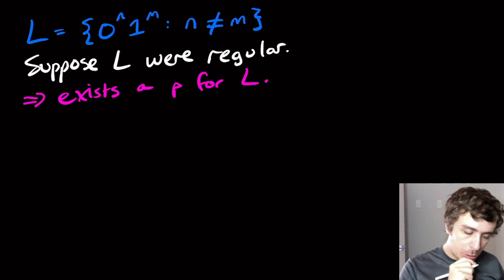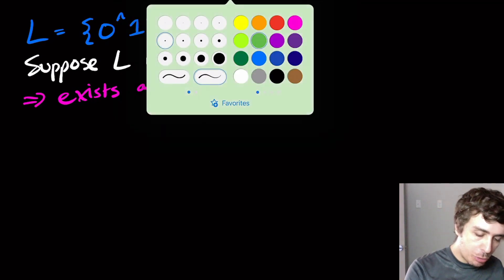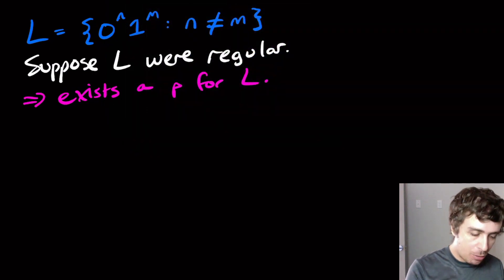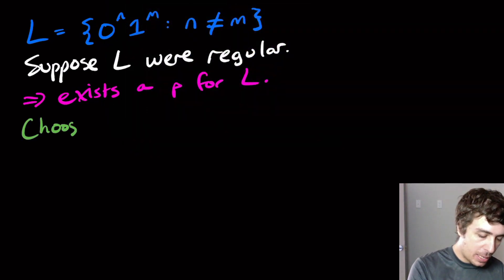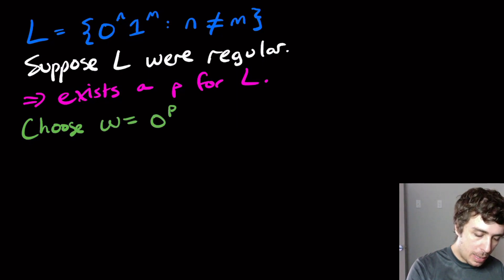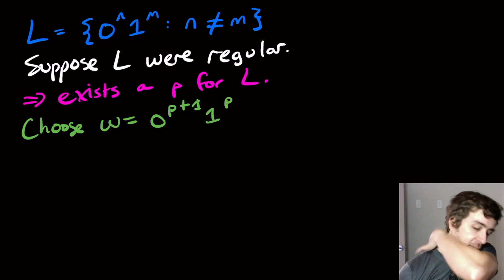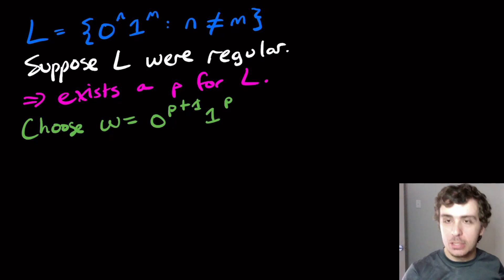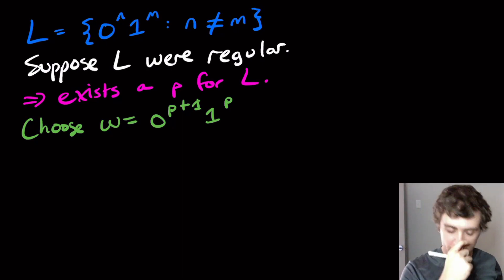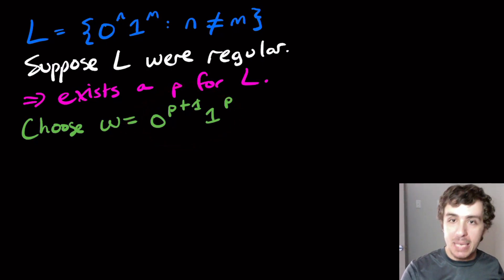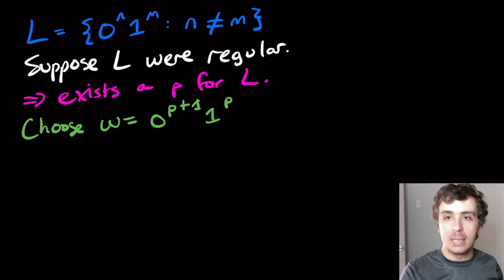Now we need to pick a string that is in the language and of length at least p. So choose w equal to 0 to the p plus 1, 1 to the p. That's a reasonably good choice because it's length at least p, and the two exponents are not the same.